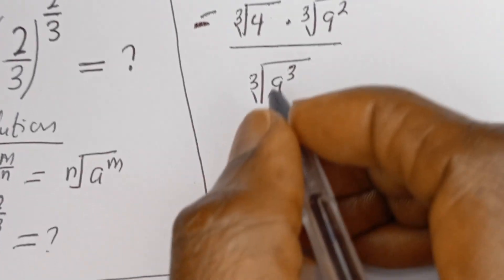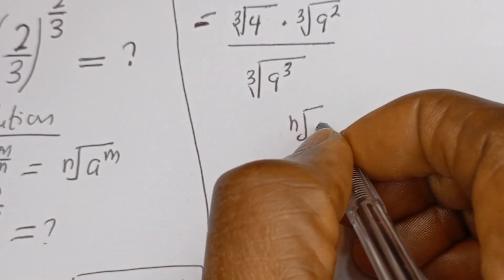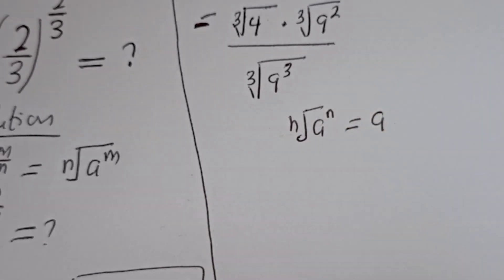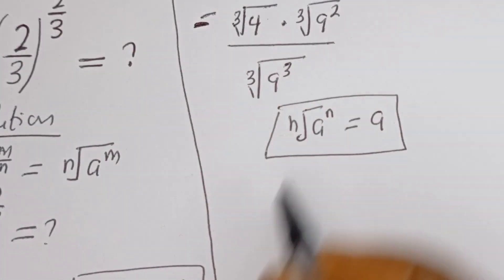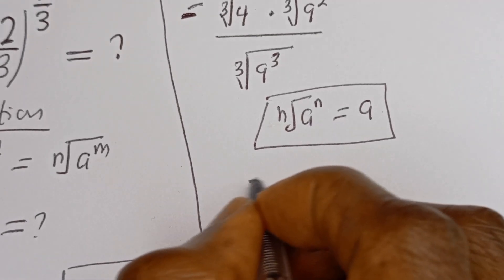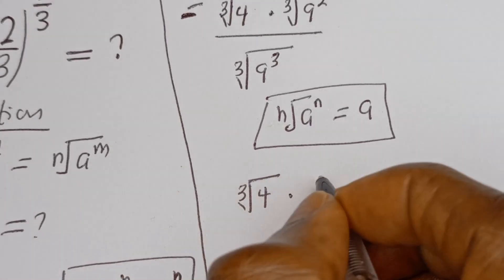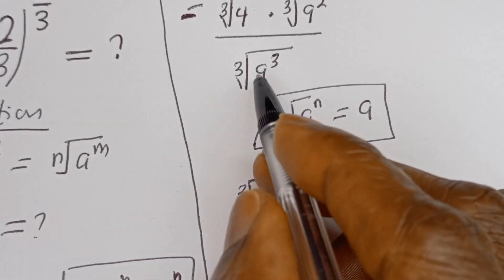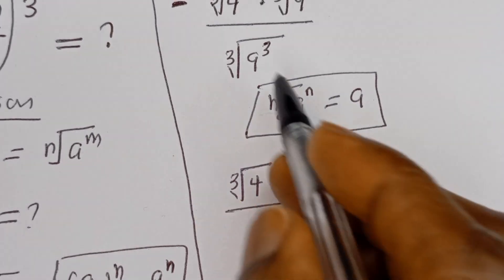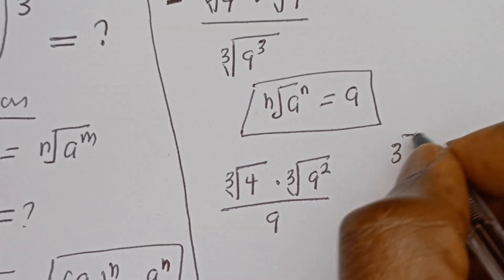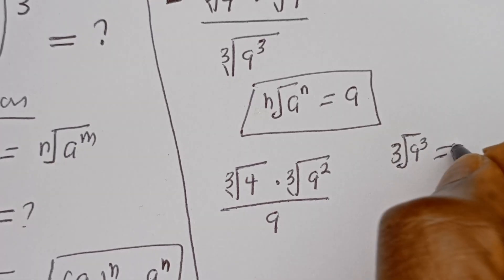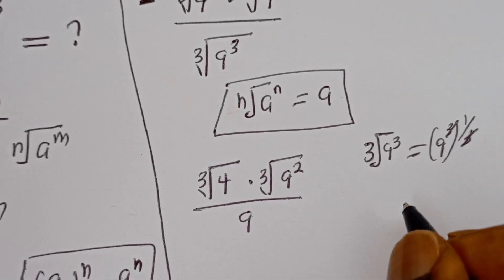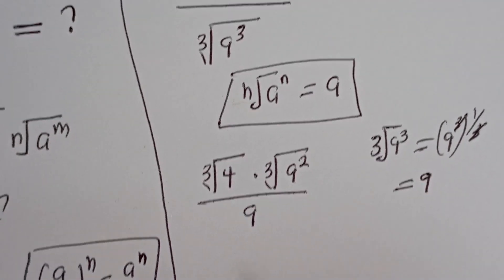Now take note of this: if you have the nth root of a to the power of n, this is equal to a. So the cube root of 9 to the power of 3 equals 9 to the power of 3, to the power of 1 over 3, which simplifies to 9. That is how we get this.